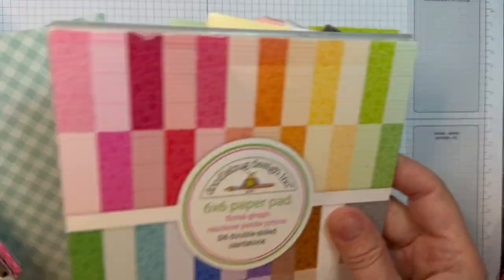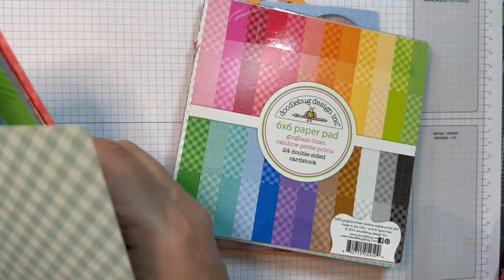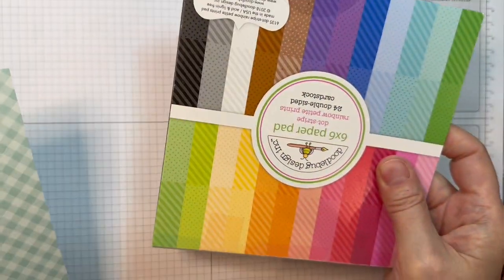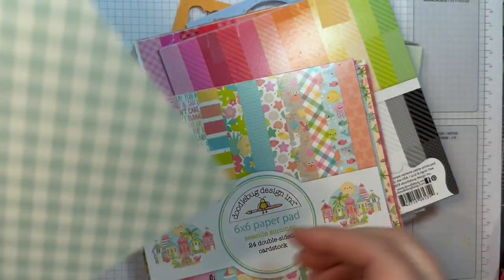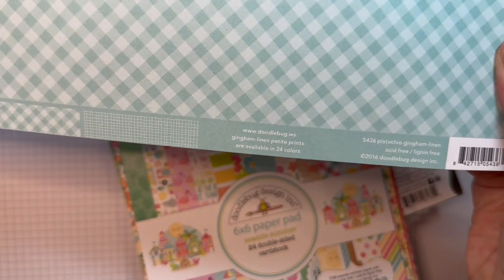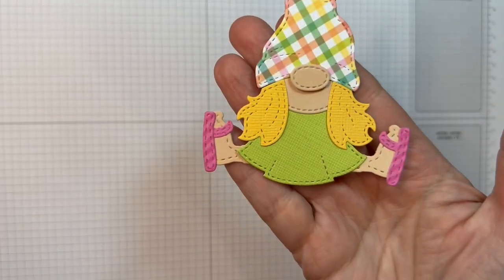I'm also using Doodlebug's Floral Graph Paper, Gingham Linen, the Dot Stripe all in the 6-inch Rainbow Petite Prints, and I'm using Seaside Summer 6-inch Pad and the Pistachio Gingham Linen 12-inch in the Petite Prints as well on that Gingham side.